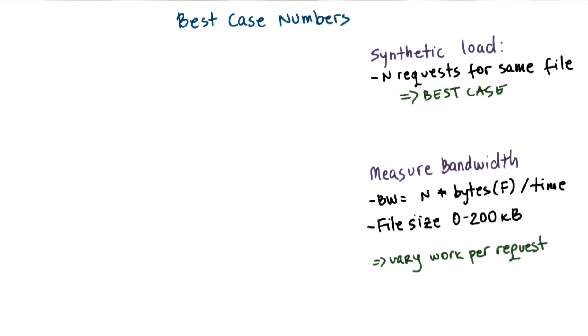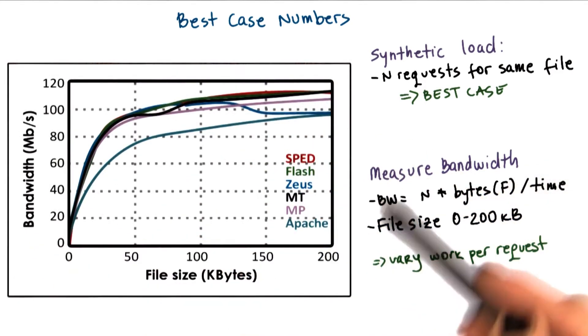By varying the file size, they vary the work that both the web server performs on each request, but also the amount of bytes that are generated on a request. So we sort of assume that as we increase the file size, that the bandwidth will start increasing. So let's look at the results now.